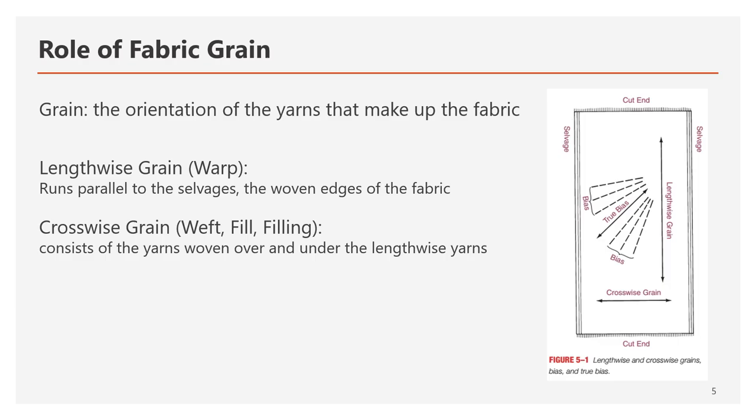First, about the lengthwise grain. Looking at the picture on the right, the vertical cut line is called the lengthwise grain, also called warp. This lengthwise grain runs parallel to the selvages — the woven edges of the fabric. Lengthwise yarns tend to be more stable, less apt to stretch or shrink, and more apt to hang straight than crosswise yarns.